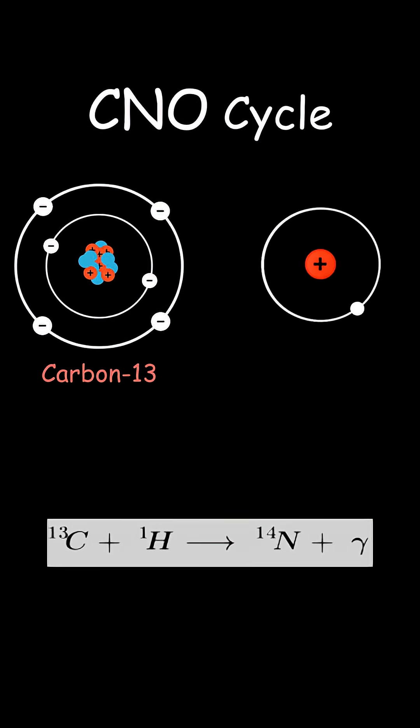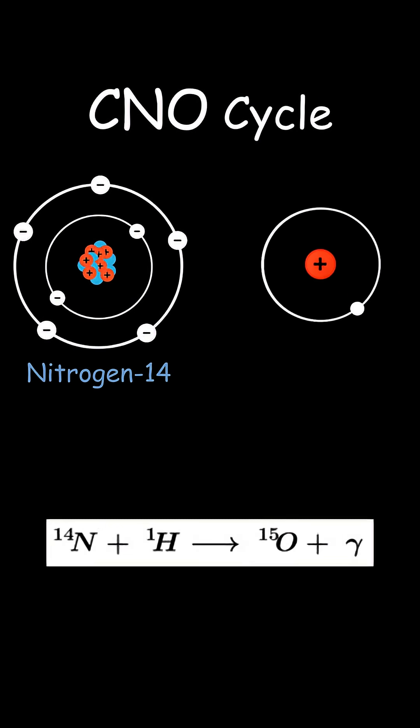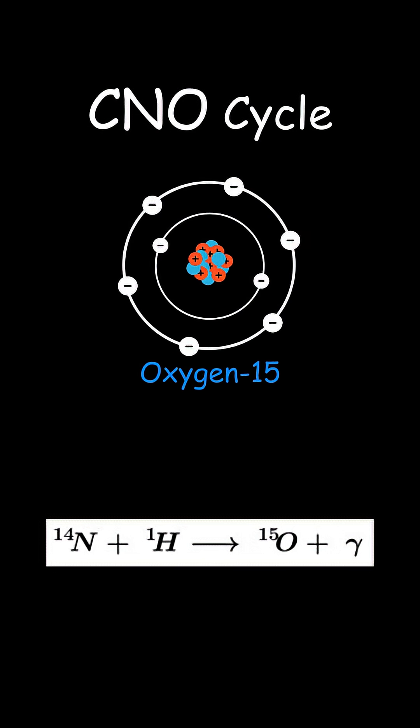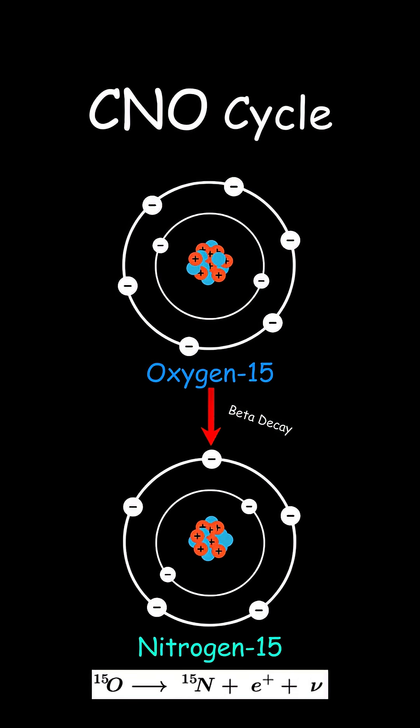Next, that same carbon-13 captures another proton, becoming nitrogen-14, which captures yet another proton to become oxygen-15. Now that oxygen-15 decays into nitrogen-15 by emitting a positron and a neutrino.